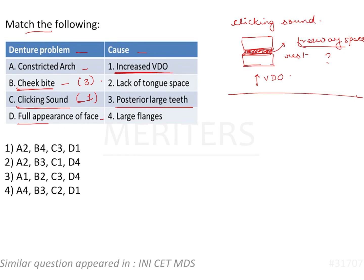Full appearance of face: if the flanges are very long or if the vertical height is too high, then the face will appear fuller and longer than usual, and the support will be more than required. So that would be D-4.